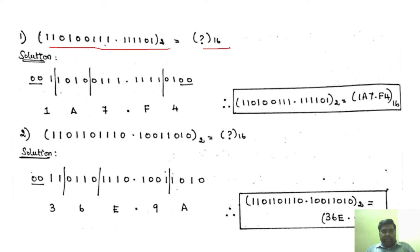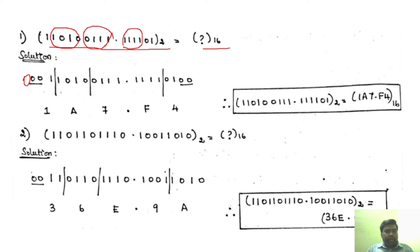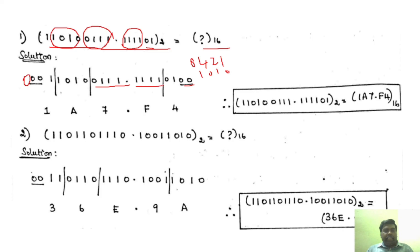For the first binary to hexadecimal example, we group the integer part into 4 bits from LSB, with 1 bit left over so we add 3 zeros. For the fractional part we group into 4 bits from MSB, adding 2 zeros to complete the last group. Using 8-4-2-1 code: 0 1 1 1 is 7, 1 0 1 0 is 10 represented as A, 0 0 0 1 is 1, 1 1 1 1 is 15 represented as F, and 0 1 0 0 is 4.